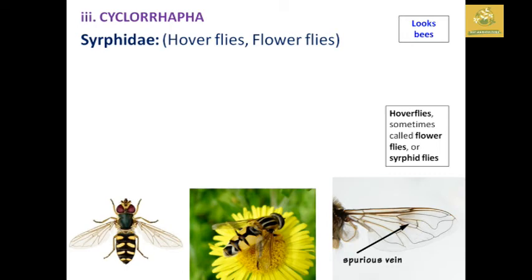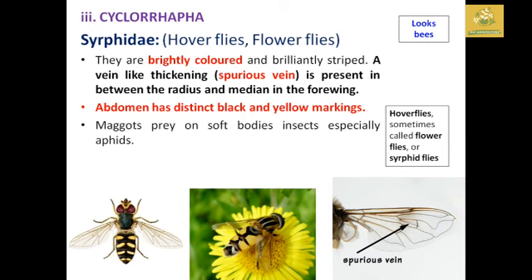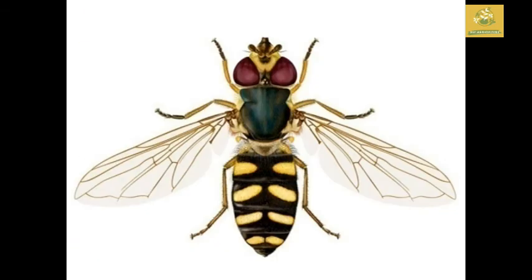In Cyclorrhapha, Syrphidae — the hoverflies and flower flies — are brightly colored. A spurious vein, thick and superior, is present between the radius and the median in the forewing. The abdomen has distinct black and yellow markings. The maggots prey on soft-bodied insects, especially aphids. Adults are known as excellent fliers and important pollinators. You can see this picture and identify those points for your examination.